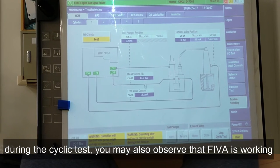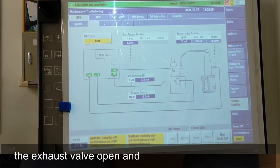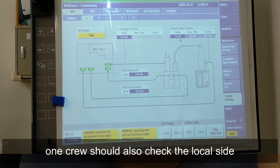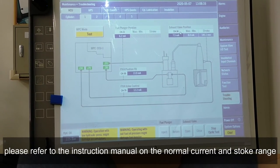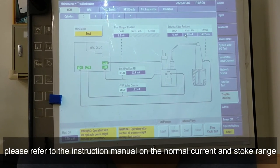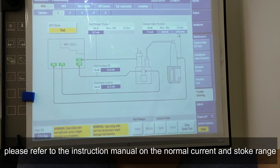During the cyclic test you may also observe that even if fewer bulbs are working, the exos valve opens and closes once in two seconds. One crew should also check the local side. Please refer to the instruction manual on the normal current and stroke range.